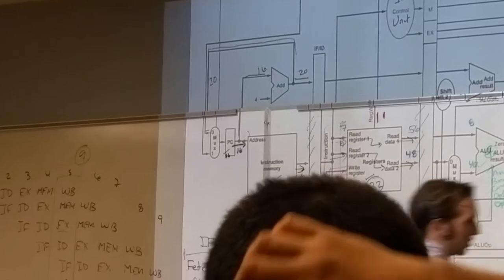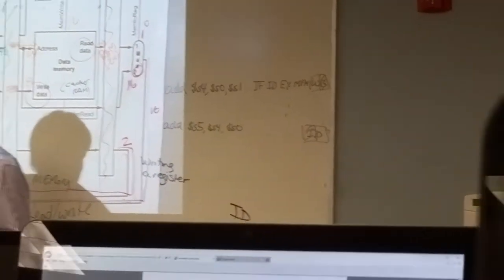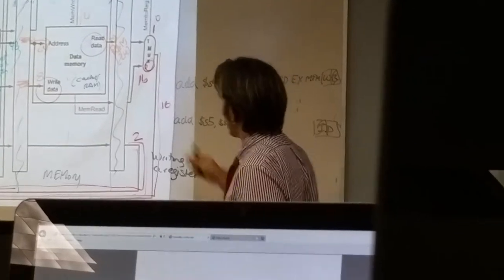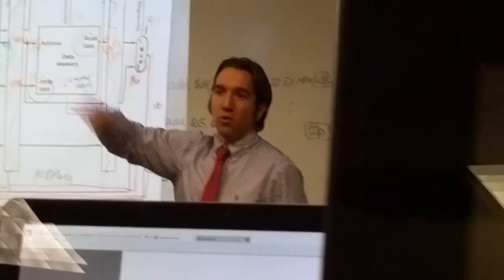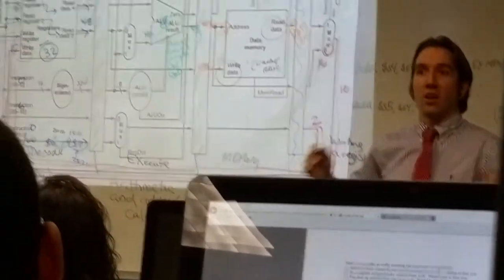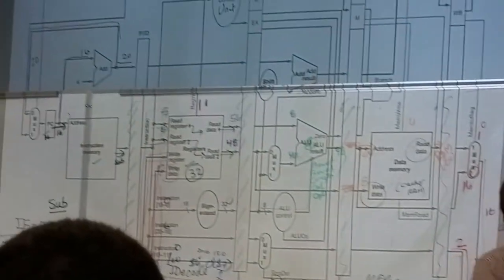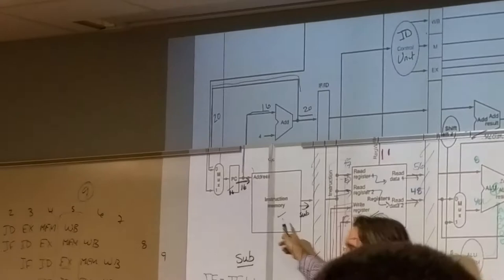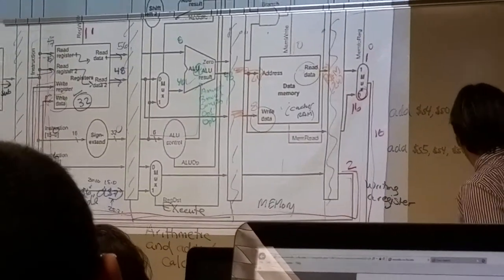So I can probably already guess that ID, which only uses registers, and write-back, which also only uses registers, are going to be faster. Then, ifetch, which uses RAM, and data memory, which uses RAM.